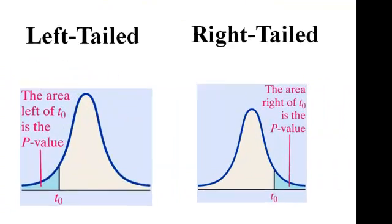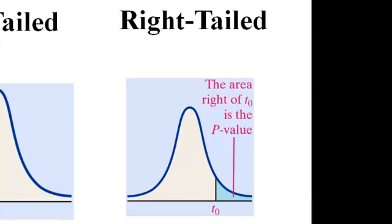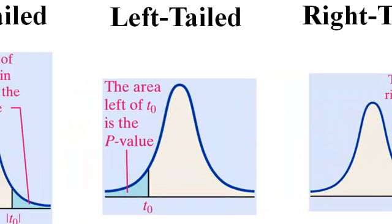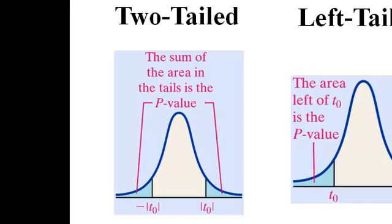And so we can have a right tailed test where the p-value is the area under the curve to the right of the test statistic t₀. We can have a left tailed test and a two tailed test.